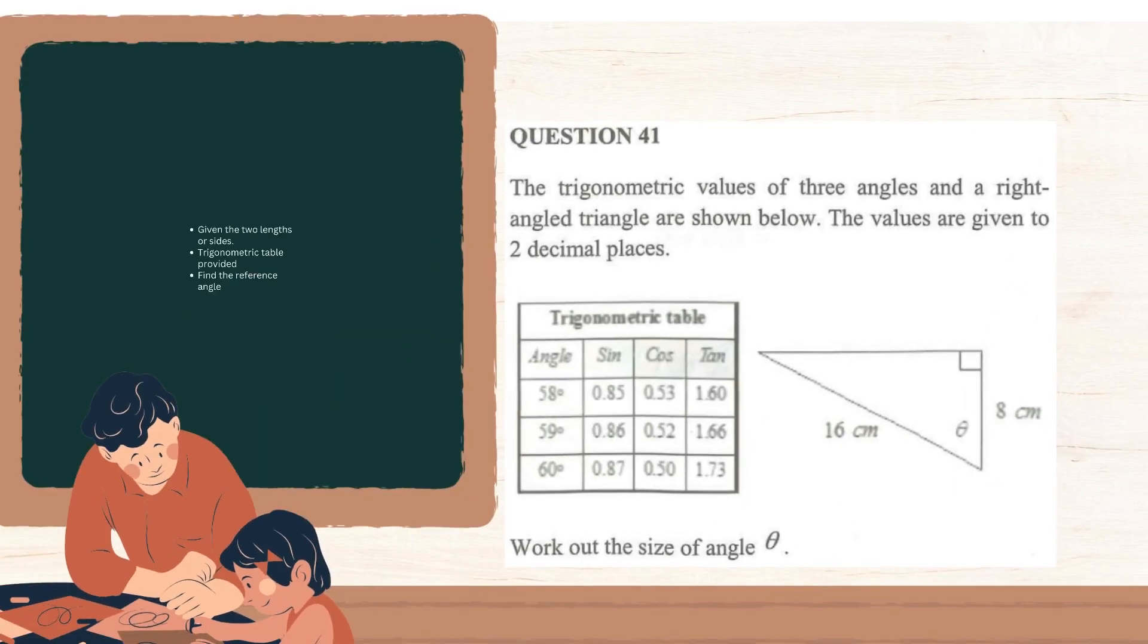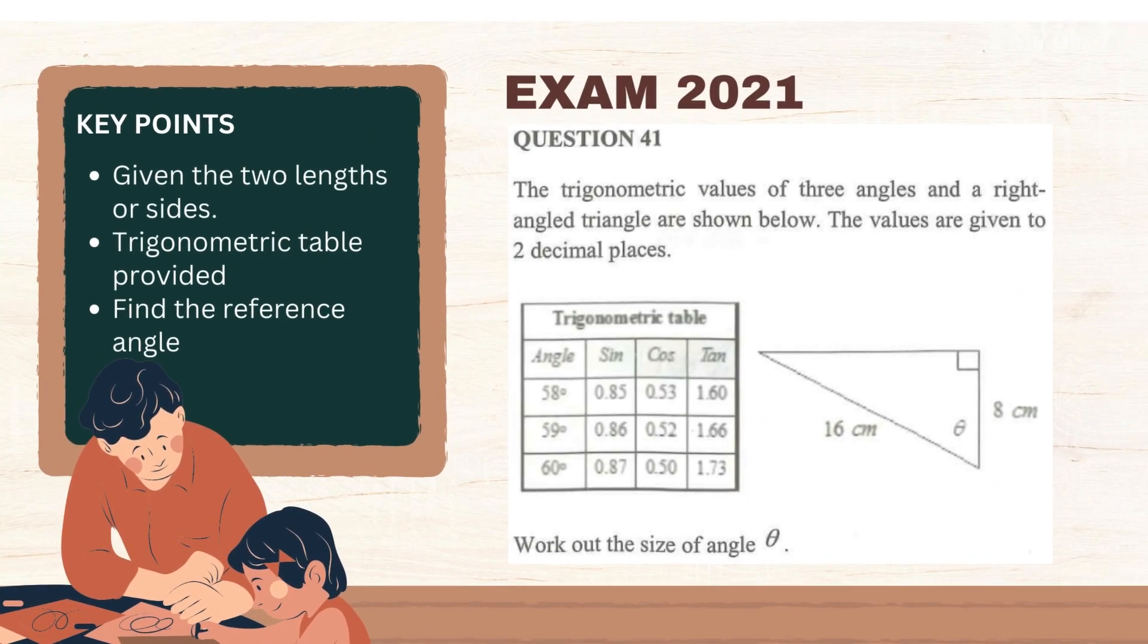Compare that to year 2021 exam question number 41. The three important notes we found were, the two lengths or sides are given, the trigonometric table is already provided, and we were tasked to find the reference angle. Now take a moment to read through the question.